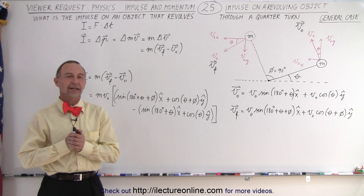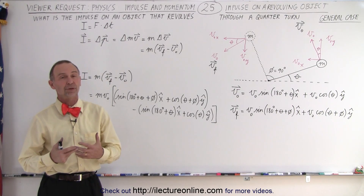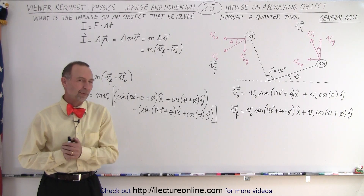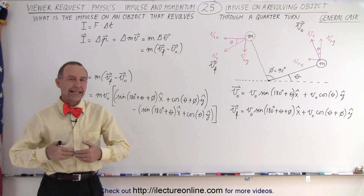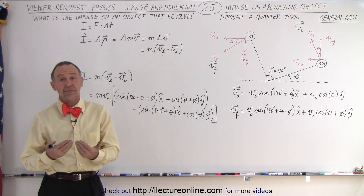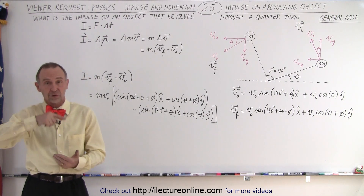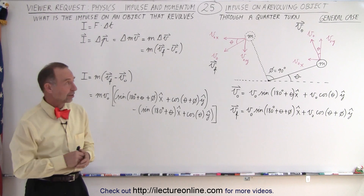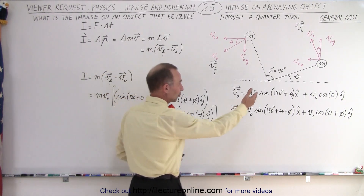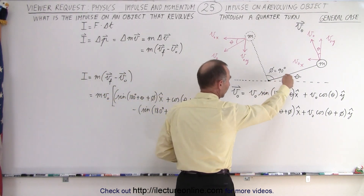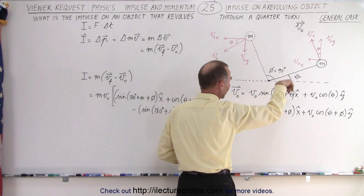Welcome to iLecterOnline. Here's a follow-up to the question from our viewer: how to calculate the impulse of an object that goes around — that revolves around a fixed point at a distance radius r from its fixed point, just rotating around.